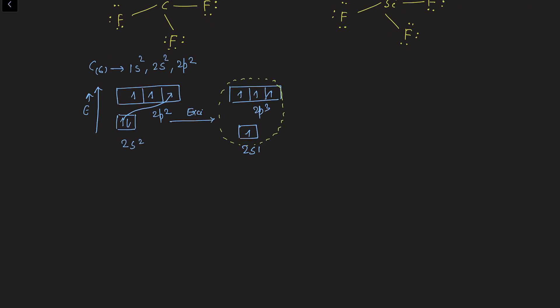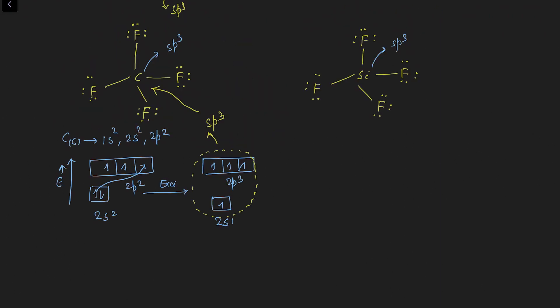Similarly, check the configuration of silicon. Silicon has atomic number 14, with configuration 1s² 2s² 2p⁶ 3s² 3p². Importantly, silicon has 3d⁰ — empty d orbitals — whereas in carbon there is no possibility of any empty d orbital.